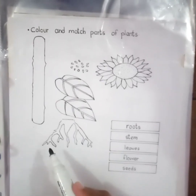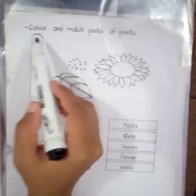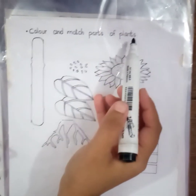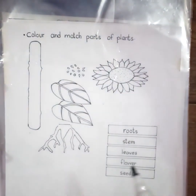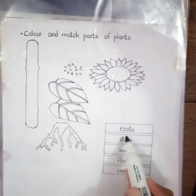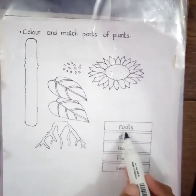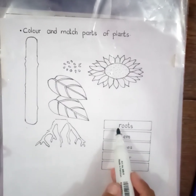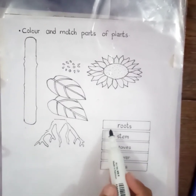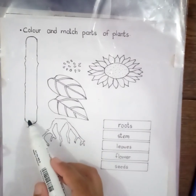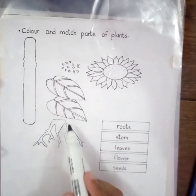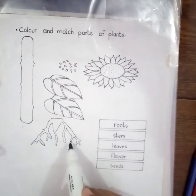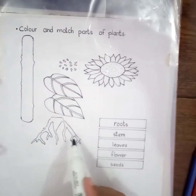Now let's start another worksheet — color and match the parts of plants. What's written here? Roots. Now find out the roots. Where are the roots? Is this root? No. Is this root? No. Is this roots? Yes. Now match.